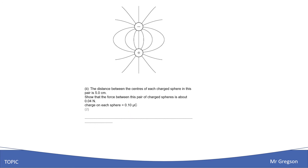This question expands on the previous one. I think it's weighted slightly wrong — it's only worth two marks, and I thought the previous one being worth three makes it a little unweighted. It's a straightforward question: find the right equation and solve it. That's your hint — it's a straightforward equation substitution, which is probably why it's only worth two marks.